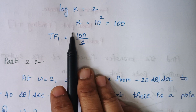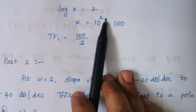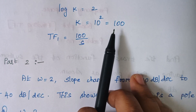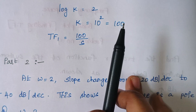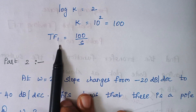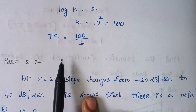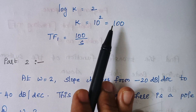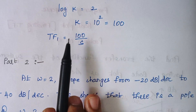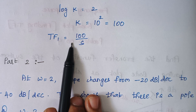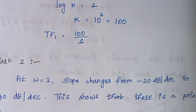K is given by 10 squared, which is 100. So our first transfer function is K divided by S, and the value of K is 100. Just substitute the value — that's it.